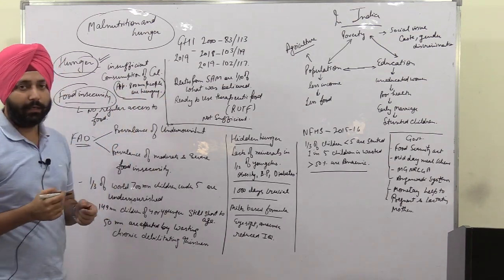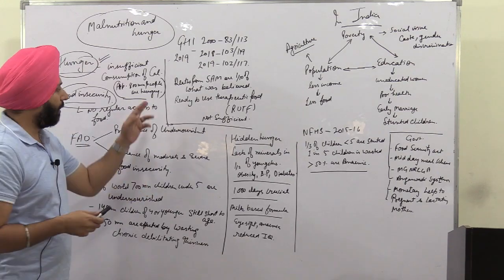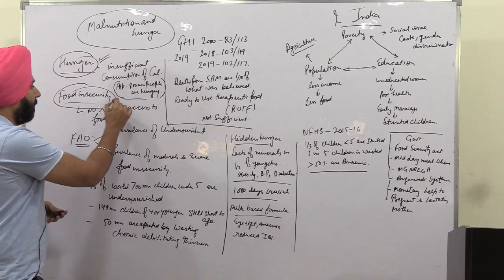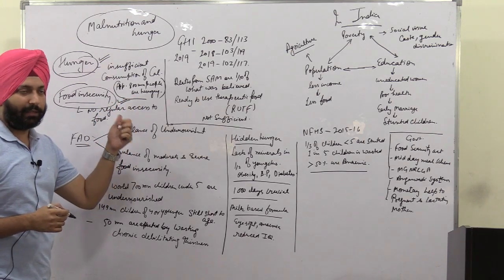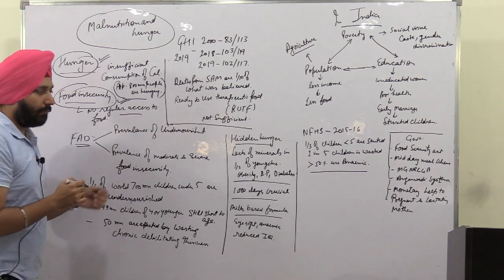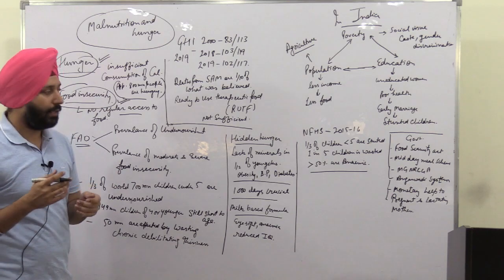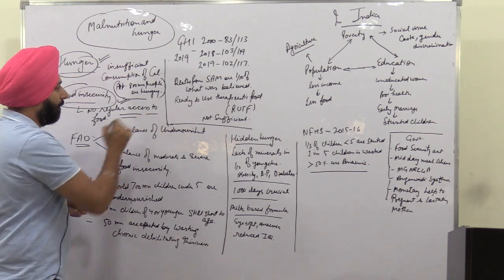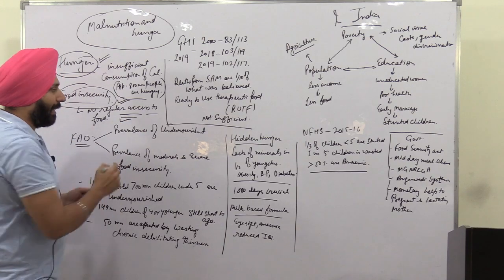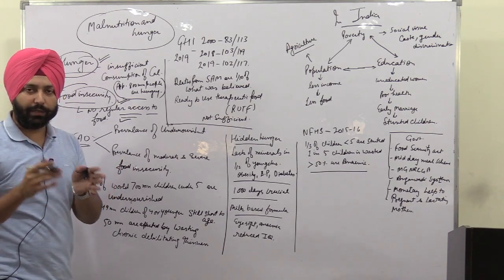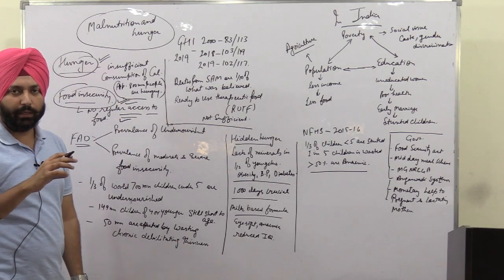At present there are approximately 800 million people in the world who are hungry. The second term is food insecurity, which is different from hunger in that here you are getting adequate amounts of food and sufficient calories, but you are not sure that it will remain continuous in the long term — that is, you don't have regular access to sufficient food. That is known as food insecurity, and it can be moderate.